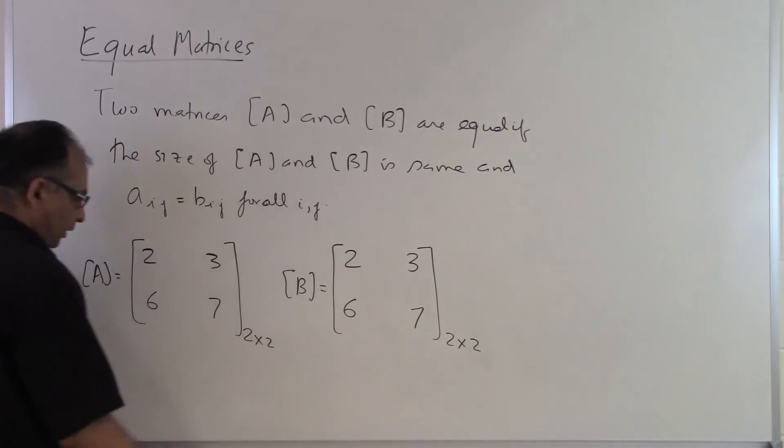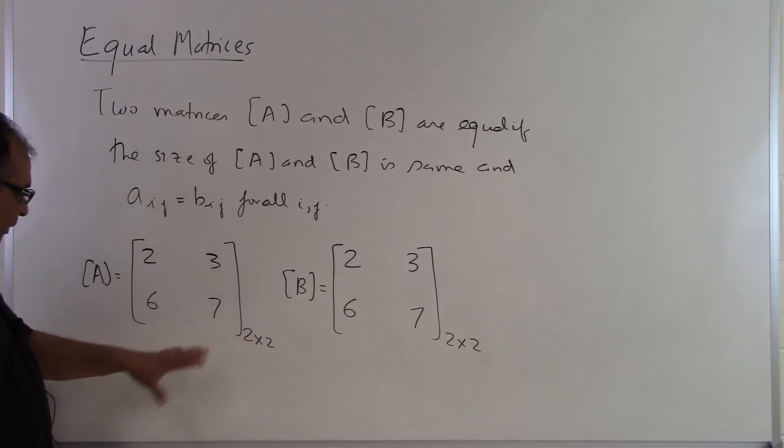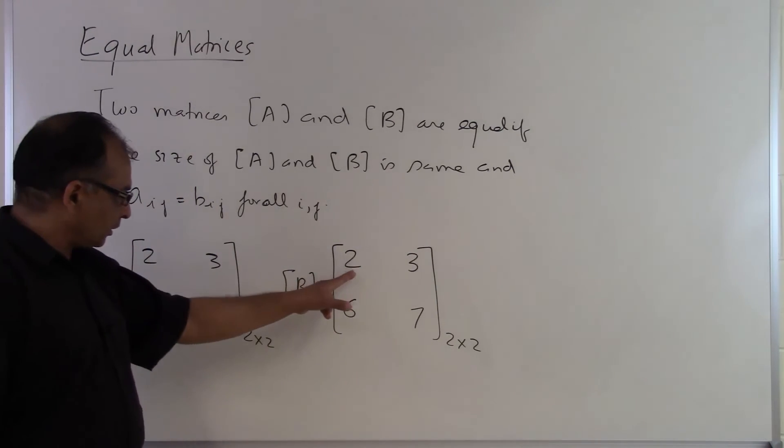So it might seem to be funny that, hey, I'm writing the same matrix, but that's what it is, that two matrices are considered to be the same if the order is the same and the elements are the same at their proper ij location.